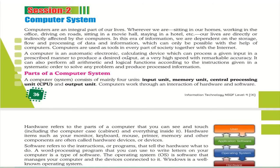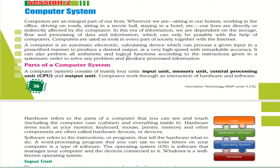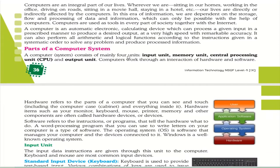The user keeps the input. In the CPU the processing is done as per our instructions, and those instructions are converted into desirable output with remarkable accuracy — all within a second. There are various parts of a computer system: first is the input unit, next is memory unit, third is the central processing unit, and next is the output unit.